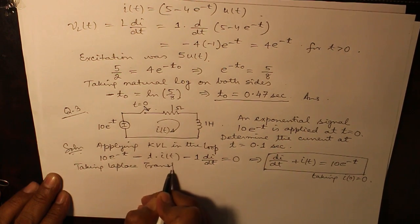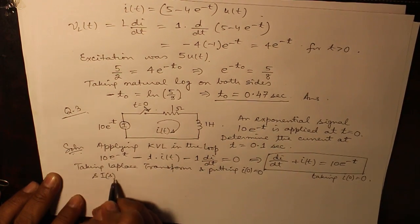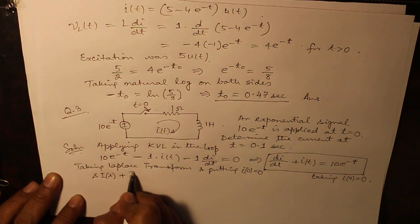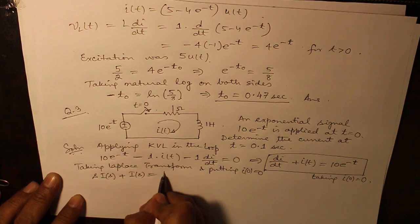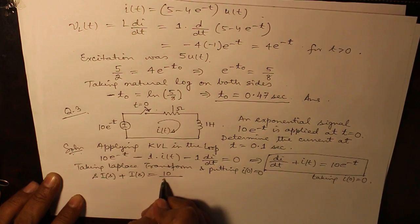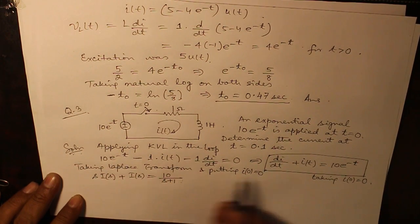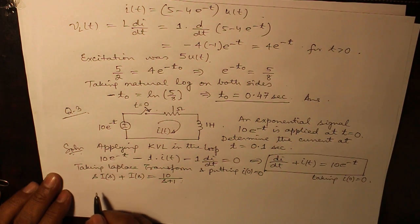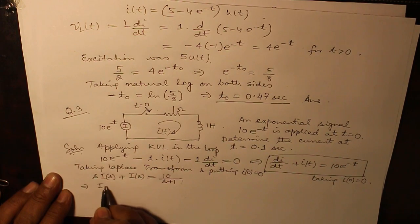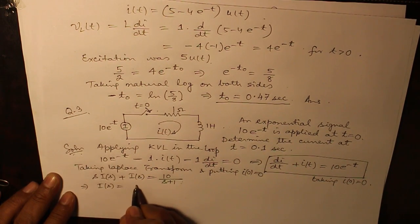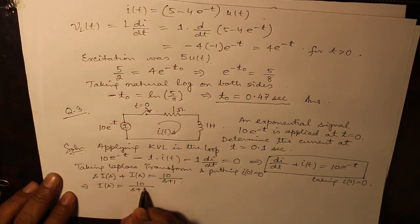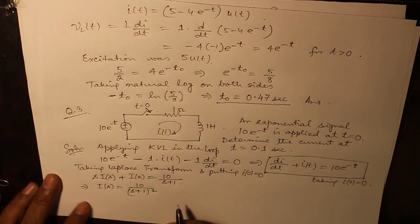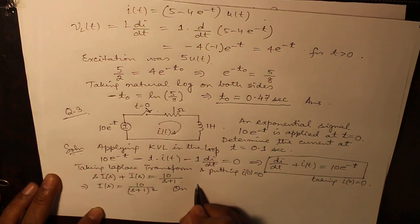Taking Laplace transform, we have S i s plus i s equals 10 over s plus 1. This 10 over s plus 1 is the Laplace transform of 10 e raised to power minus t. So i s becomes 10 over s plus 1 whole square.